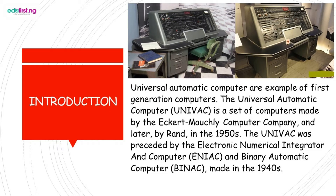What do we understand by Universal Automatic Computer? We have various generations of computers — the first, second, third, fourth, and fifth generation. The Universal Automatic Computer is an example of first generation computers. UNIVAC is a set of computers made by the Eckerd Murchley Computer Company, and later by RAND, in the 1950s. It was preceded by the Electronic Numerical Integrator and Computer, the ENIAC, and a Binary Automatic Computer, which were made in the 1940s.